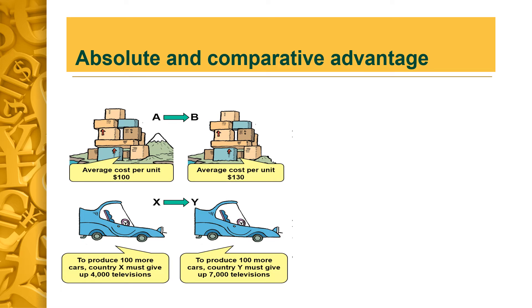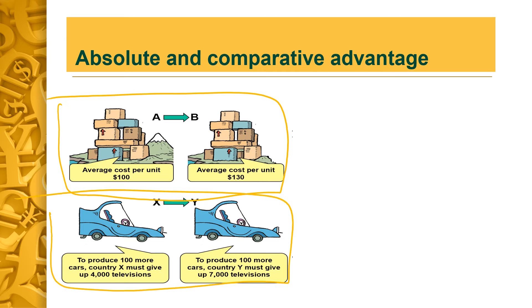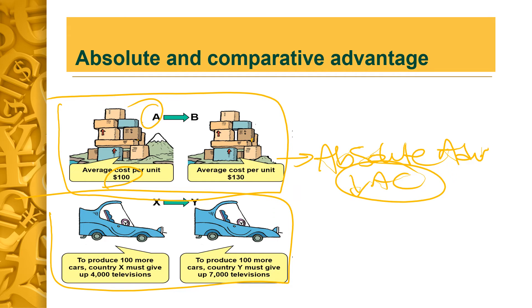There is one concept called absolute and comparative advantage. Looking at a diagram: if the average cost per unit is $100 in country A and $130 in country B, which country should specialize in the production of this good? Where we have the lower average cost — that would be country A. So country A has an absolute advantage in the production of a product when it can produce that product at a much lower cost per unit than any other country. At that point, I would advise country B to stop producing and instead import from country A.